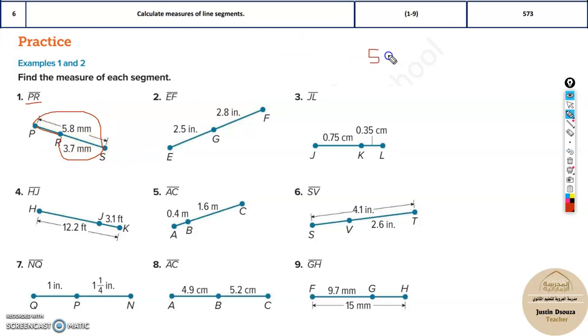You understand it is the total length 5.8 minus the segment RS that is 3.7, you will get the answer directly. You can do it mentally without using a calculator as well. It will be 3.7 to 5.8 will be 2.1, is the answer.